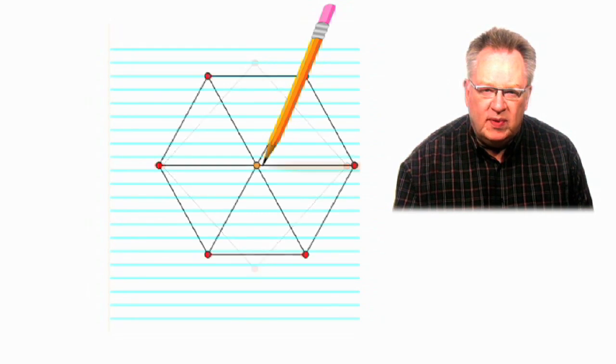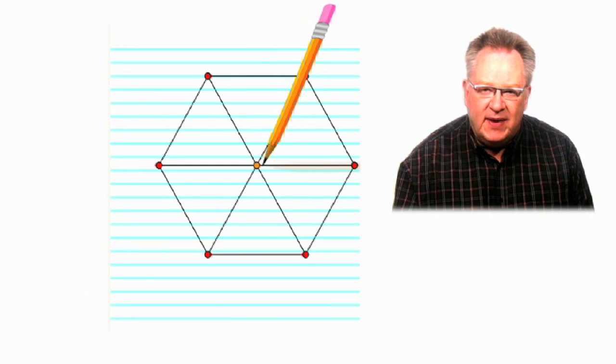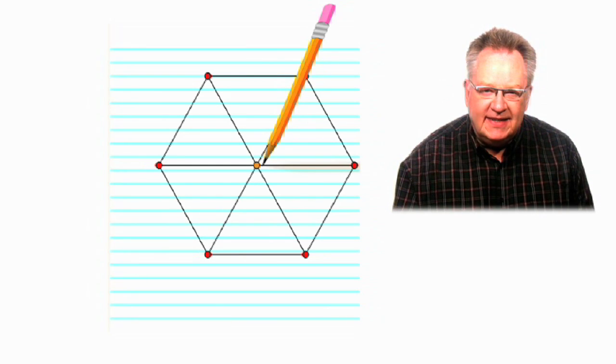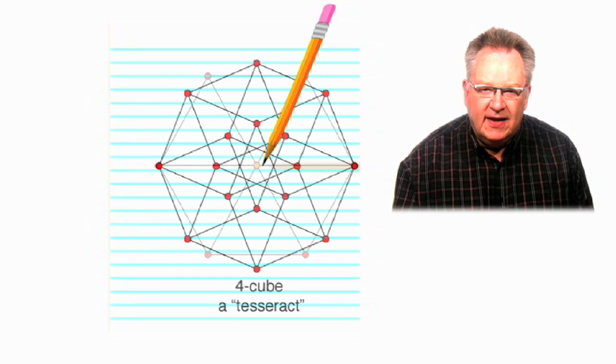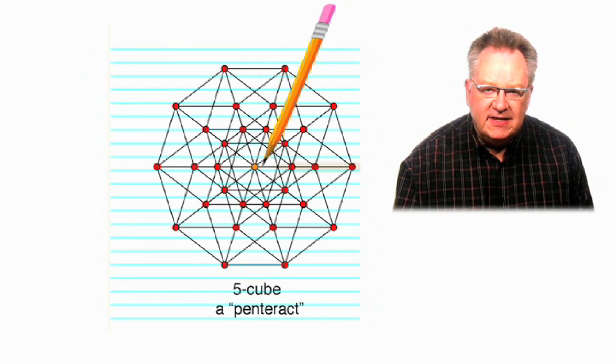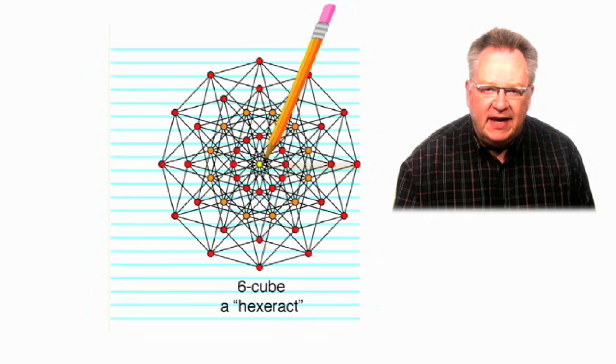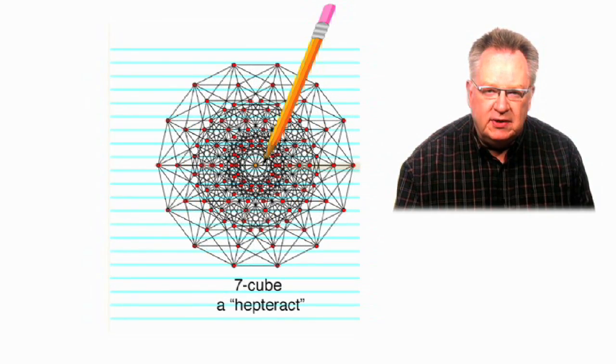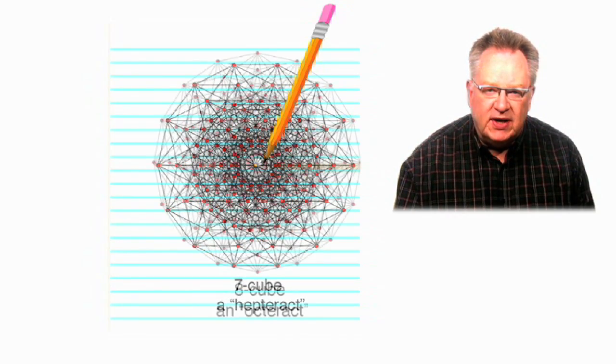A picture of a cube on that paper is like the third dimension, in which case the pencil is like the fourth. A picture of a tesseract represents the fourth dimension, and so the pencil would be like the fifth, and so on. Obviously, this gets harder and harder to visualize as the number of edges increases with each additional dimension. But the logic keeps working.